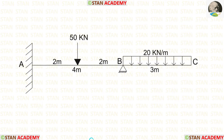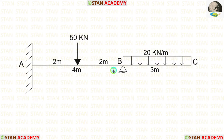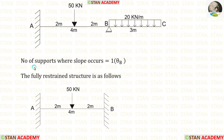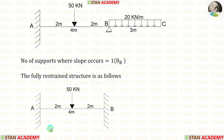In the stiffness matrix method, we check the number of supports where slope can occur. In a fixed support there is no slope; in a hinged or roller support there will be slope. In this beam, point B has a hinged support, so the number of supports where slope occurs is 1 — that is theta B. We now make the fully restrained structure by replacing the hinged support at B with a fixed support. In the restrained structure, we do not consider the overhanging span.